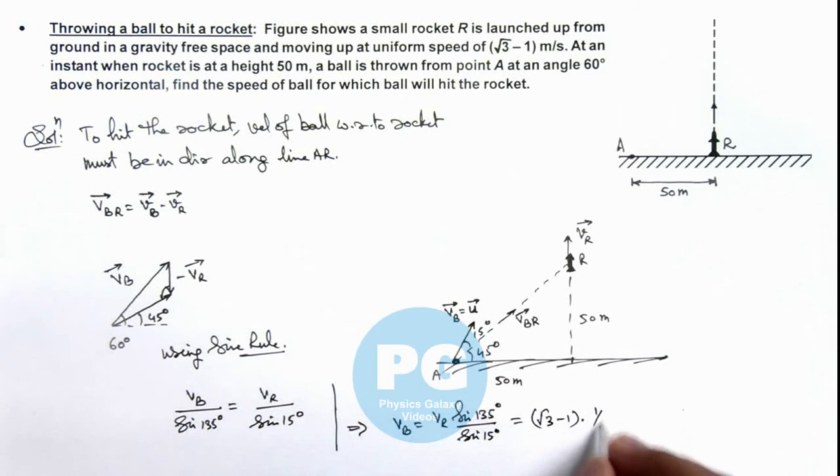Sin 135 is 1/√2 and the value of sin 15 degrees is (√3 - 1)/(2√2). And on simplifying this we are getting the result as 2 meters per second. That is the result of this problem.